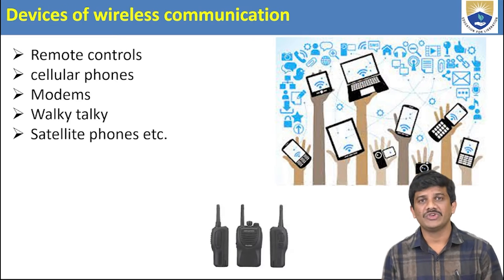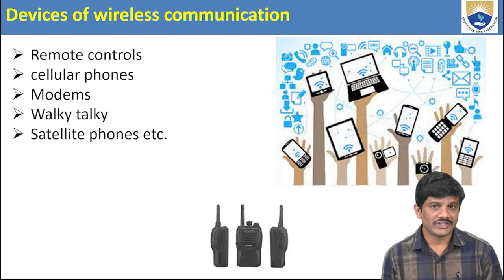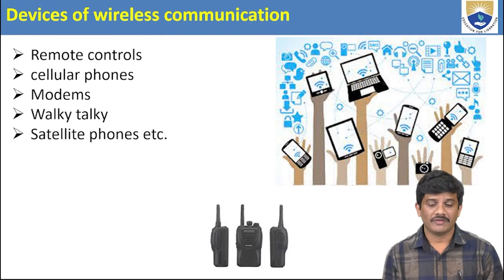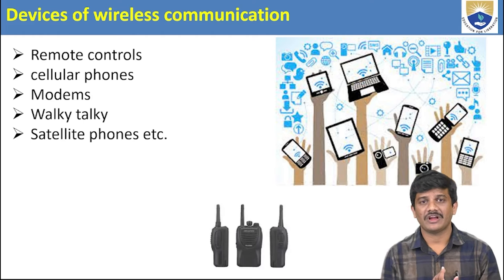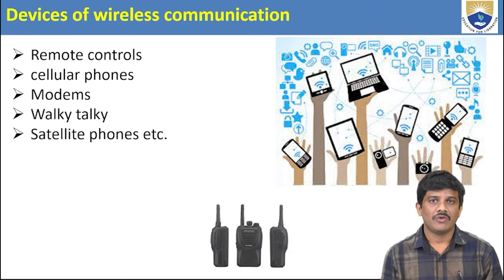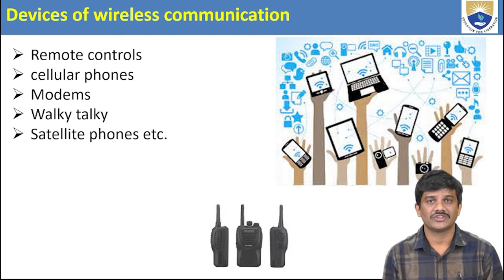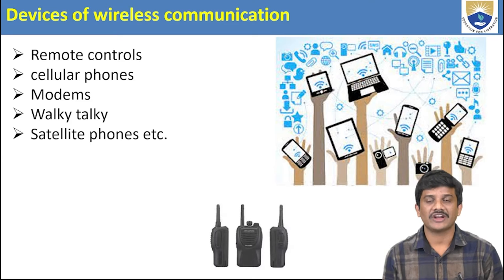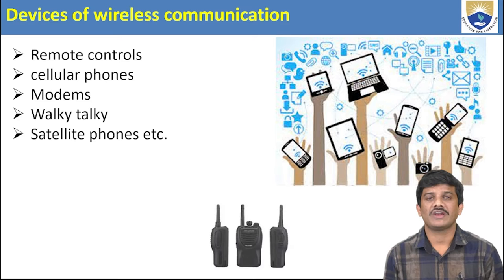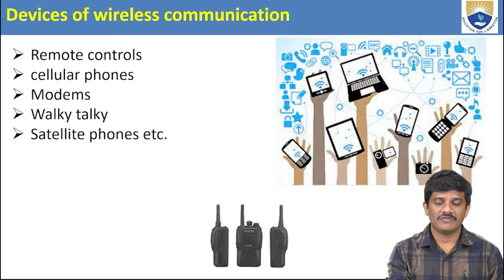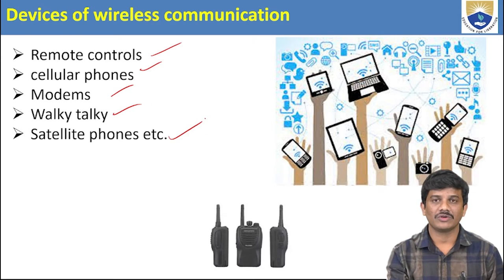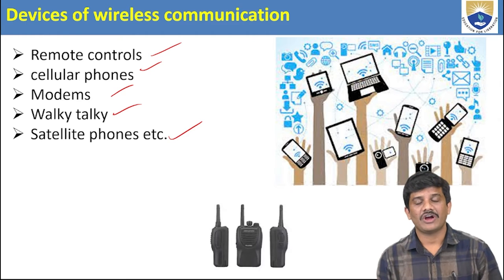What are the devices of wireless communication? Nowadays every device communicates using wireless communication. Some examples of devices include remote controls, cellular phones, modems, walkie-talkies, and satellite phones, etc. These are examples of wireless communication devices.